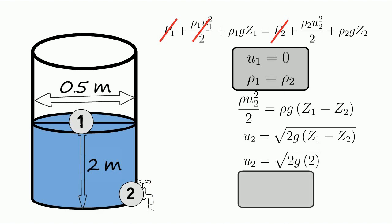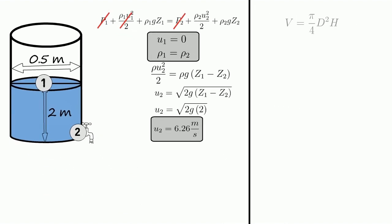By rearranging all the terms we can find the velocity at point 2, which is this much meters per second.